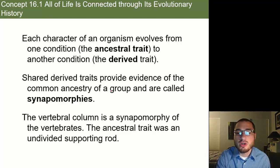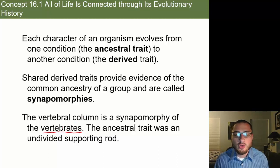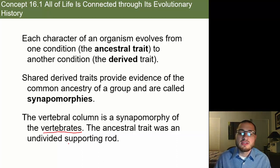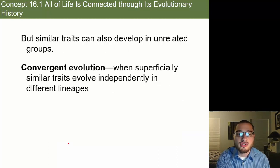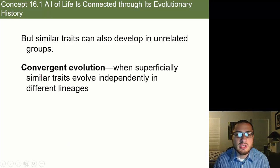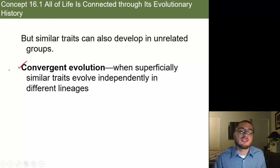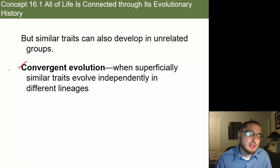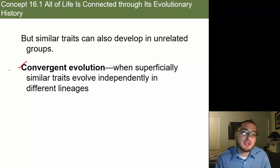The vertebral column is a synapomorphy of the vertebrates — they all have it, which shows how all vertebrates are related through that similar derived trait. The ancestral trait was an undivided supporting rod, and the derived trait that came from it is ultimately a homologous structure found in all vertebrates. However, some traits result from convergent evolution — not homologous structures, but similar structures that arose from the same selective pressure, not because the organisms are closely related.